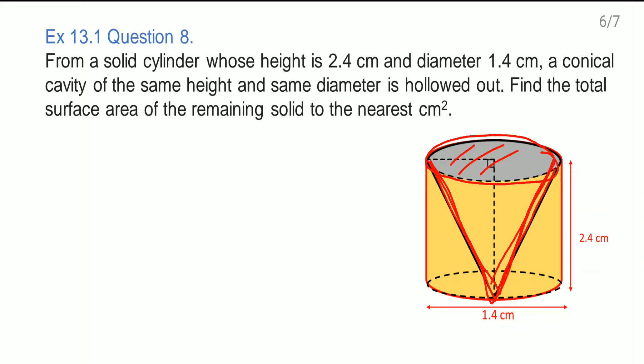The top you cannot able to touch because already you have taken out this conical portion. So only this CSA of cone you are able to touch, CSA of the cone, then CSA of the cylinder, and area of the base. Only these surfaces, three surfaces are there.